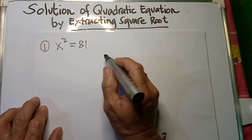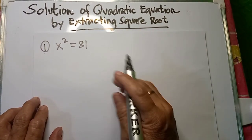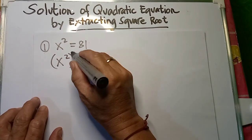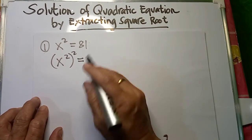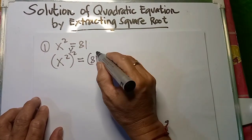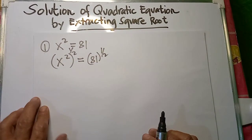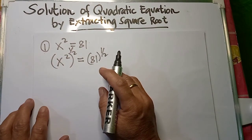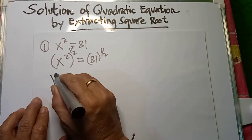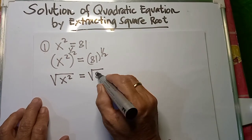So in this case, we are going to raise both sides of the equation — left and the right — by one half, so that this will become x squared raised to one half, the right-hand side also raised to one half. We have 81 raised to one half. And then after that, if we convert or rewrite the fractional exponents into radical form, this will become equal to the square root of x squared is equal to the square root of 81.